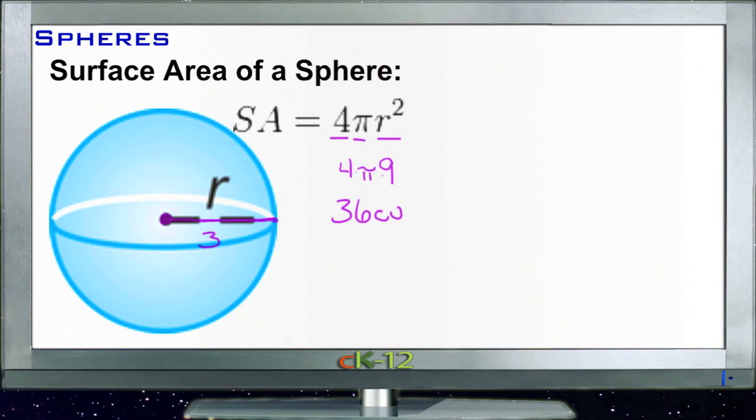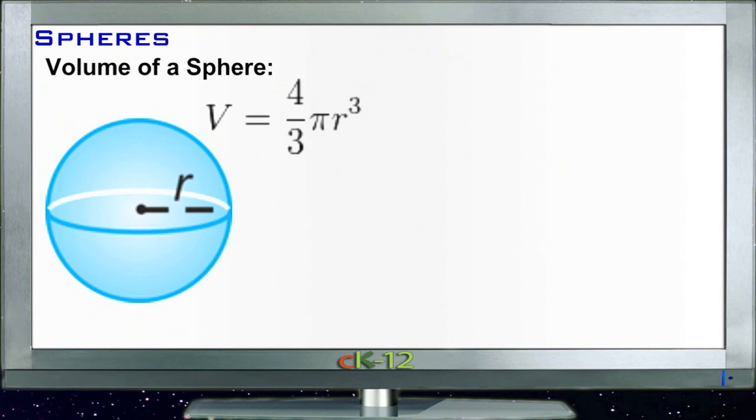Let's take a look at volume. Again, just a relatively simple formula that's well worth memorizing. 4 thirds πr cubed. So you have 1 and 1 third of π times your radius cubed. That gives you the volume of the inside of the sphere.